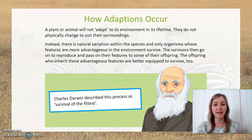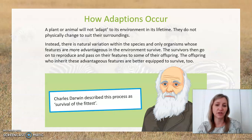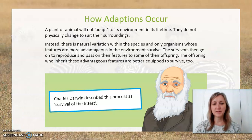And over time, in many generations of that plant or animal, it will adapt to the best features and the best particular version of itself to be able to survive. This process of adaptation over many generations of a species was famously referred to as survival of the fittest by Charles Darwin.